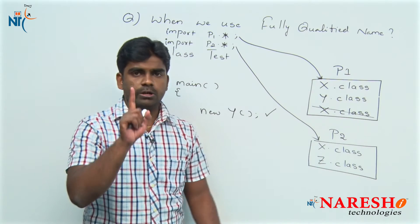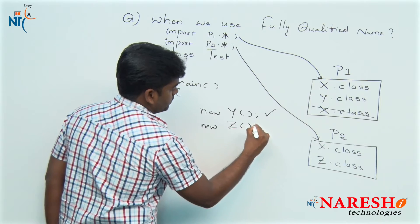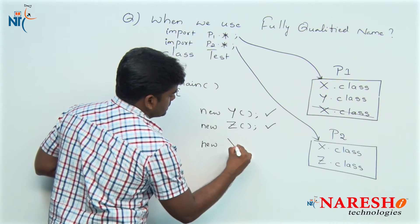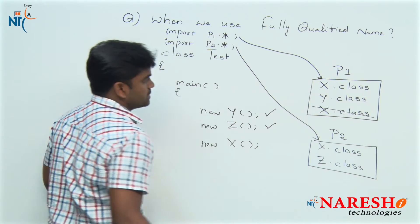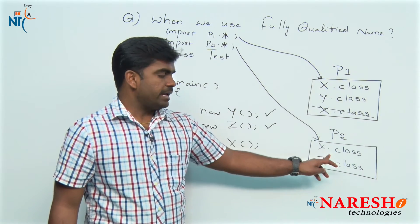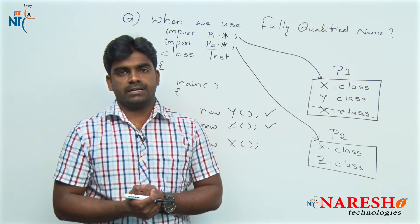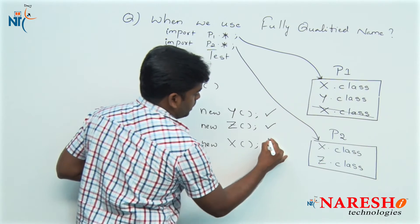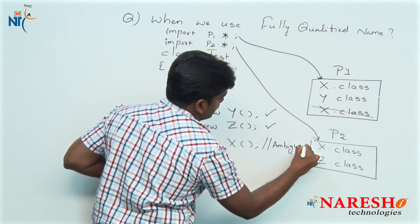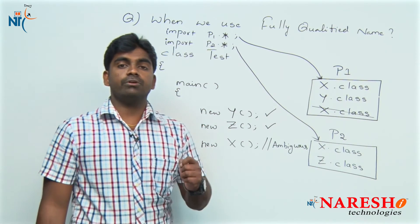And accessing Z class is also allowed. The problem arises whenever we access X class, because two X class files exist — one in p1 and one in p2. You are connected to both p1 and p2, so from which package should it access? It cannot understand. This is a collision — it is ambiguous and is not allowed. So what do we have to do? How can we access it? Here we should go for a fully qualified name.